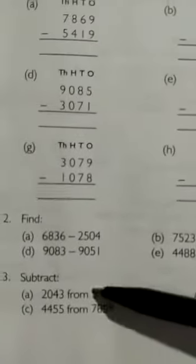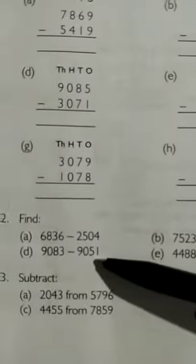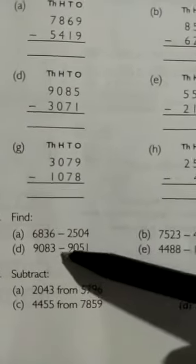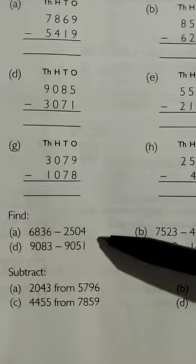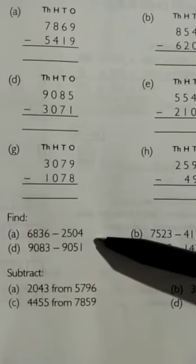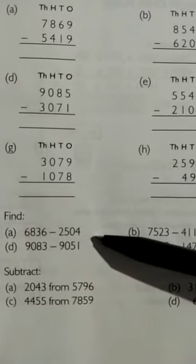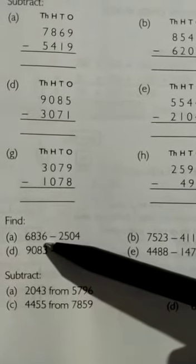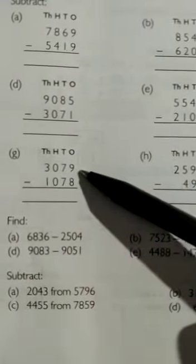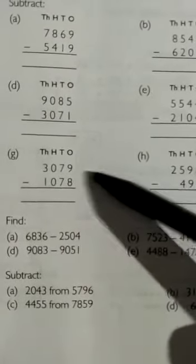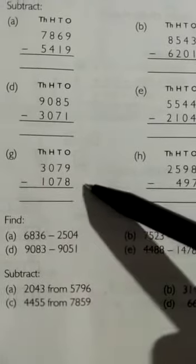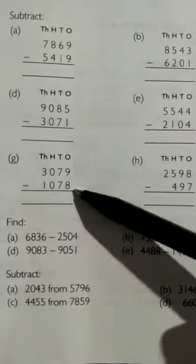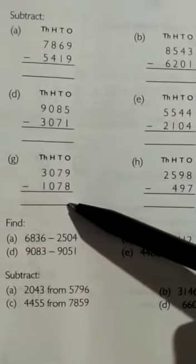Question number two: find the difference. So given the minuend and subtrahend, we have to find the resulting value — the difference. Firstly, students, your first number — the minuend — should be in the upper part, and your second number — the subtrahend — should be in the lower part. We will find your difference, meaning the resulting value.